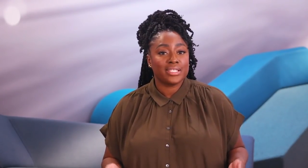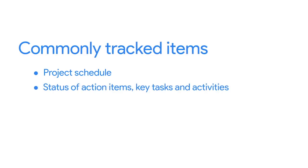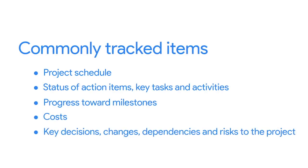To recap, the items helpful to track throughout the project execution phase include the project schedule, which contains the key tasks and activities, the status of action items, progress toward milestones, costs, and key decisions and changes. There are many moving parts to be aware of once a project is underway. I've taken you through an introduction to tracking, and coming up, we'll discuss project management tools and templates you can use to track project activities. Meet me in the next video to expand your toolkit.